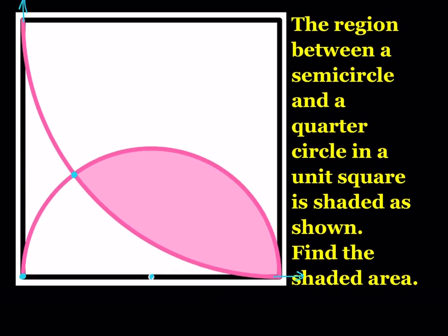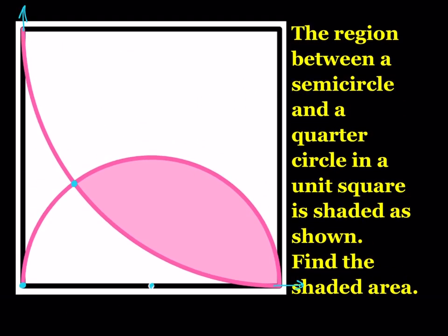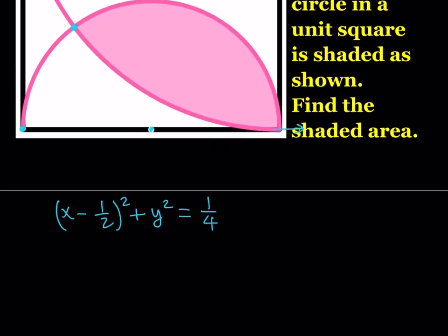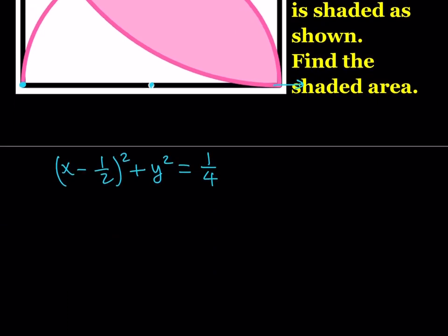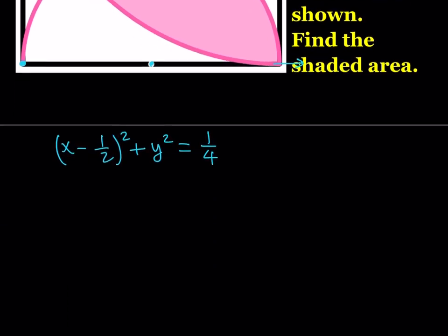The equation for our quarter circle: the center is at (1, 1) and its radius is 1 — so it's kind of like a unit circle, but not at the origin. Its equation is (x − 1)² + (y − 1)² = 1.